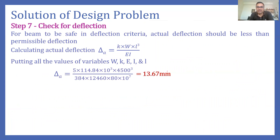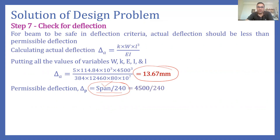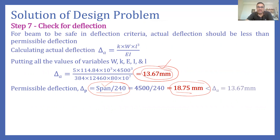Substituting all values, the actual deflection δ_actual = 13.67 mm. The permissible deflection per IS code is span/240 = 4500/240 = 18.75 mm. Since 13.67 mm < 18.75 mm, the actual deflection is less than the permissible deflection, so the beam is safe in deflection criteria.